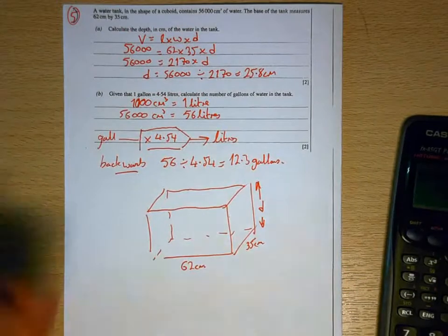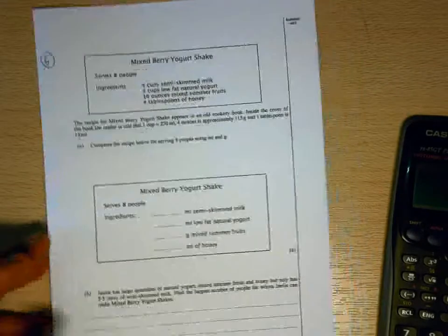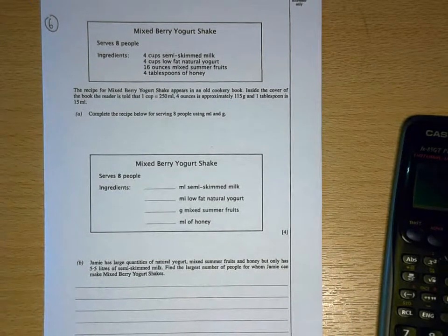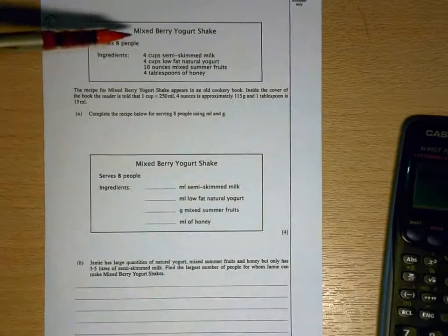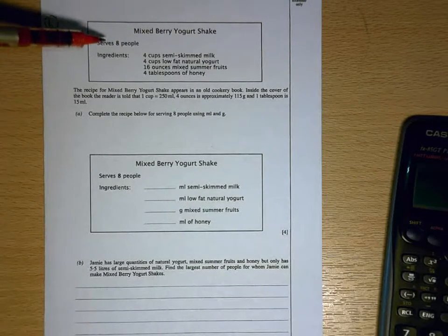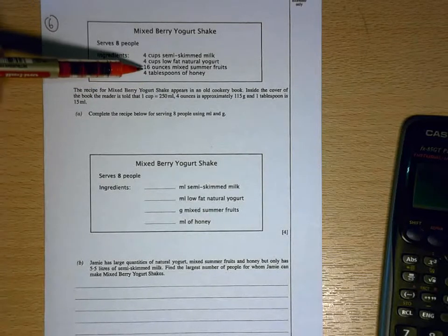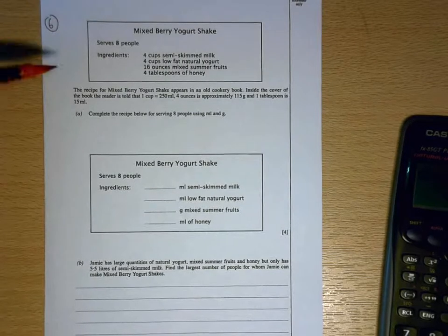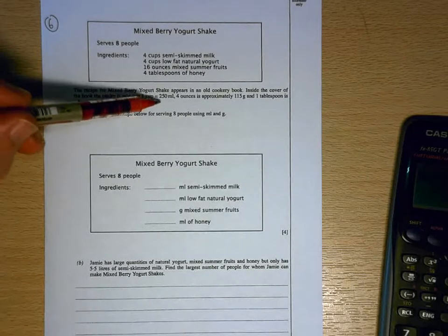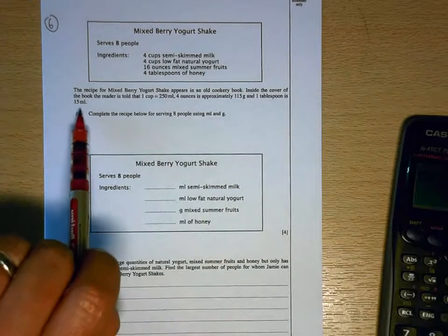So again, a different slant on these conversions. And the final question where we've got these conversions is to do with a recipe. So we're given the ingredients to make enough mixed berry yogurt shake for eight people, and the units that we're given here are in ounces, cups, and tablespoons. In this section here, they're telling us that we're told that one cup is 250 milliliters, four ounces is 115 grams, and one tablespoon is 15 milliliters.